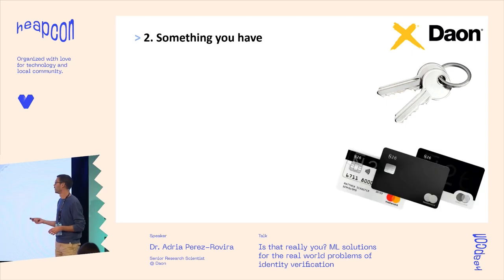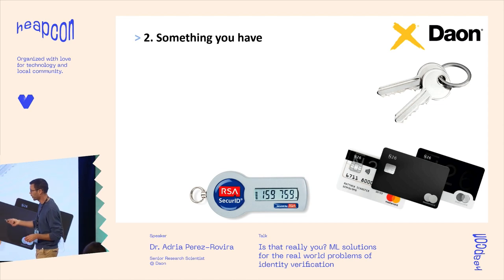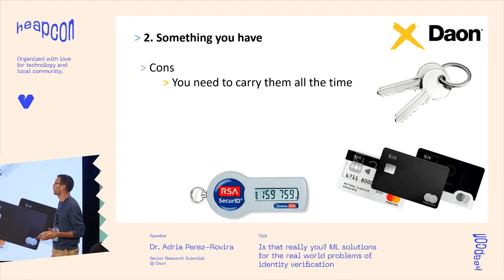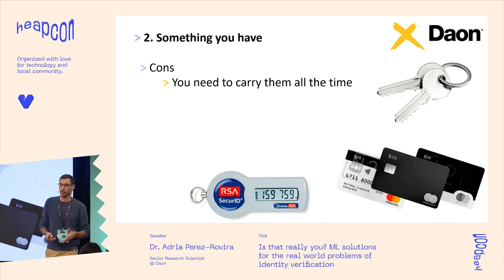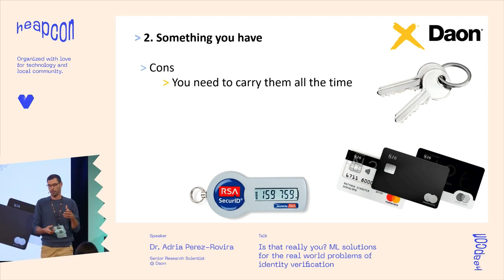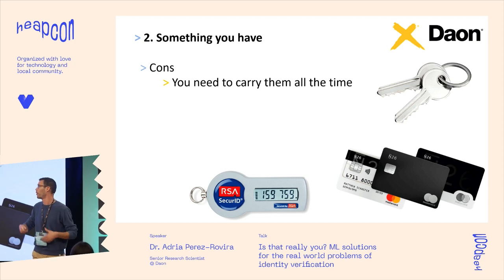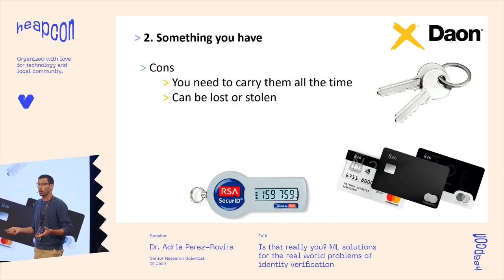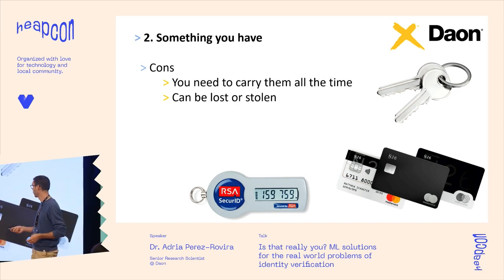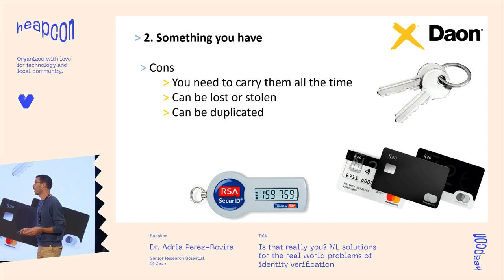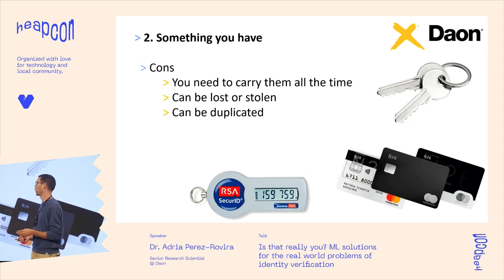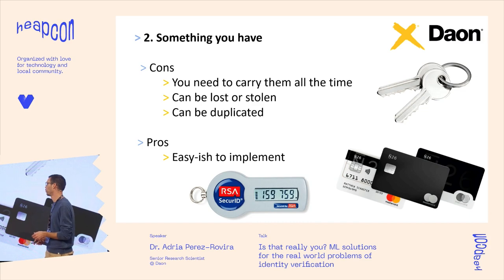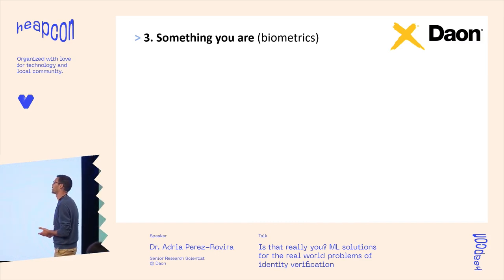The second method is something you have — it can be keys, your bank card, or those tiny tokens, sometimes called fobs. The cons: you have to carry them constantly. Nowadays you're carrying your phone, your keys, a recyclable cup — more and more things. If you get lost without your things you can't pay. It can be lost, stolen, or duplicated, especially in certain countries. Pros: it's easy to implement — not as easy as a password check, but not that complicated.